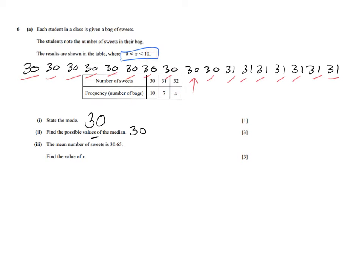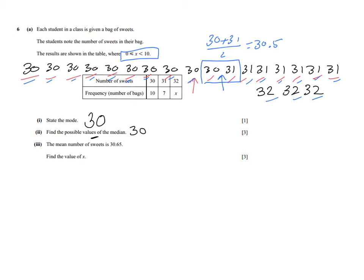We can also try other values for x — 1, 2, or 3 — as long as it's less than 10. Let's experiment. I add, for instance, 3 bags of 32 sweets. Eliminating from both ends, I end up with 2 pieces left in the middle: 30 and 31. The median is exactly between 30 and 31, so it's 30 plus 31 over 2, which equals 30.5. So my second possible value for the median is 30.5.